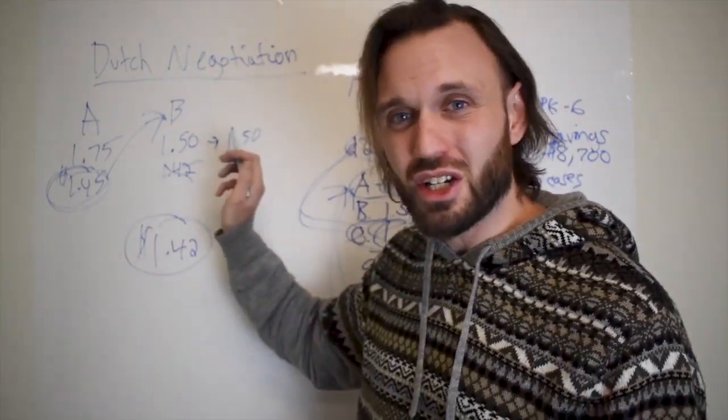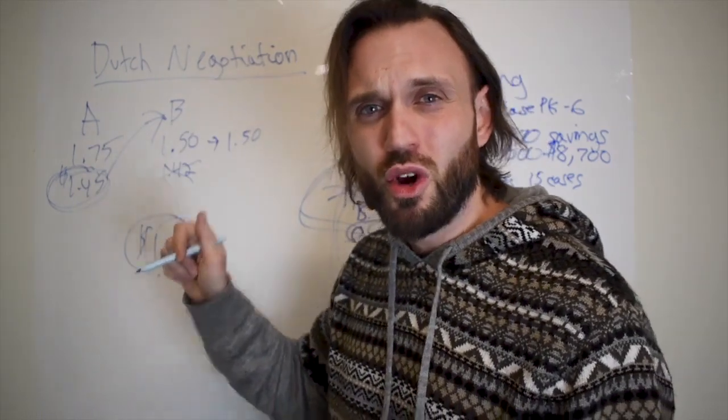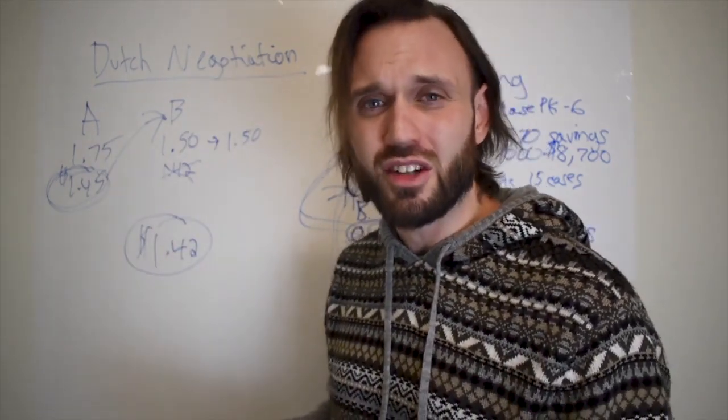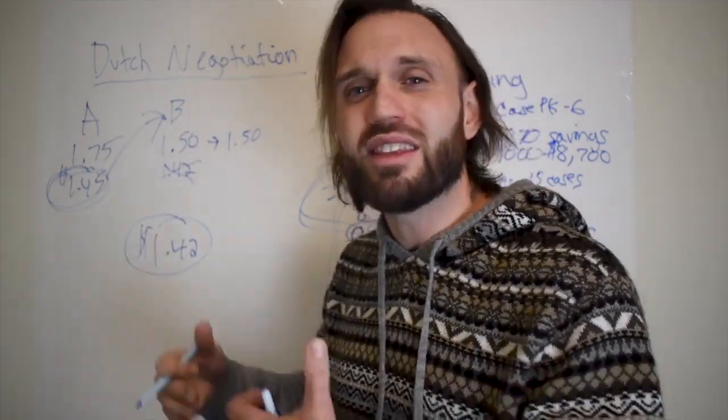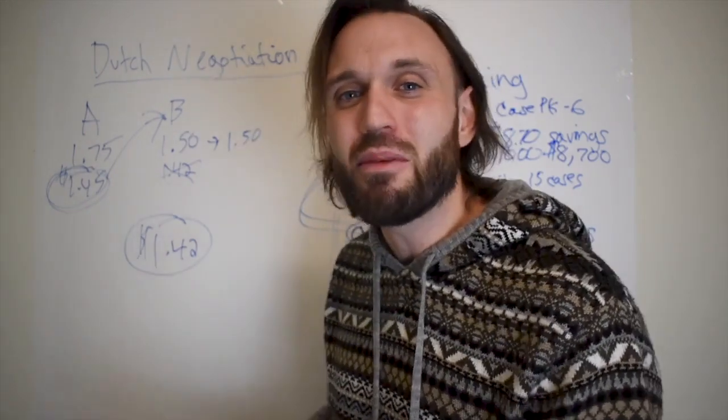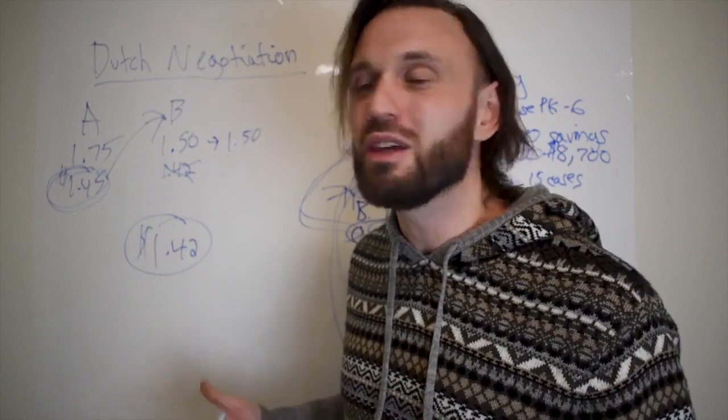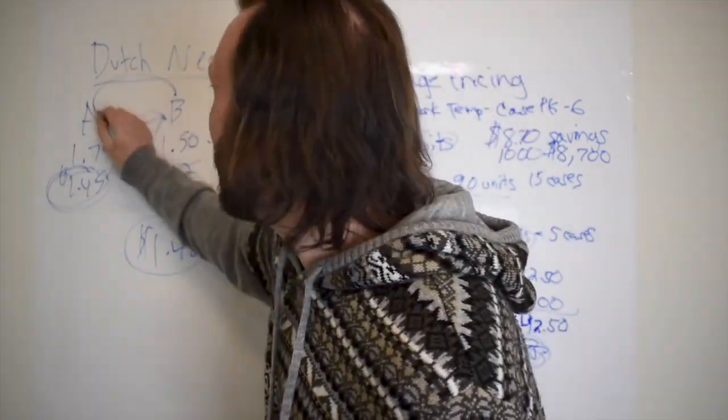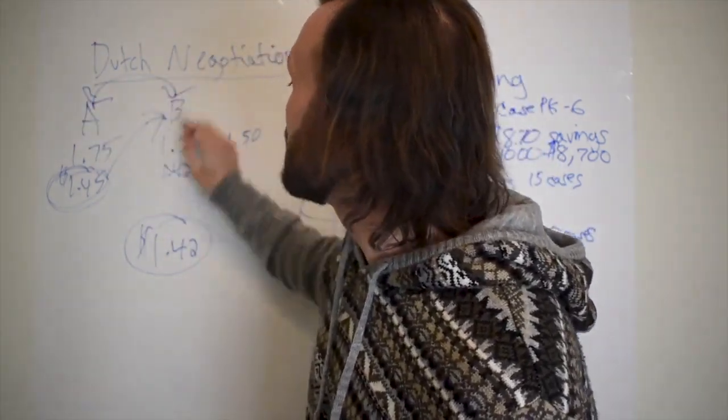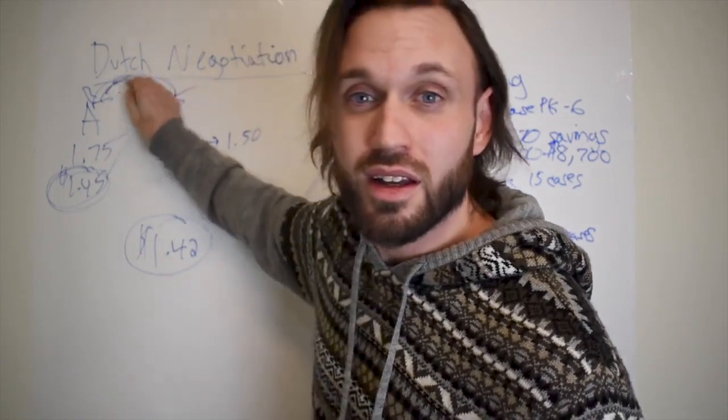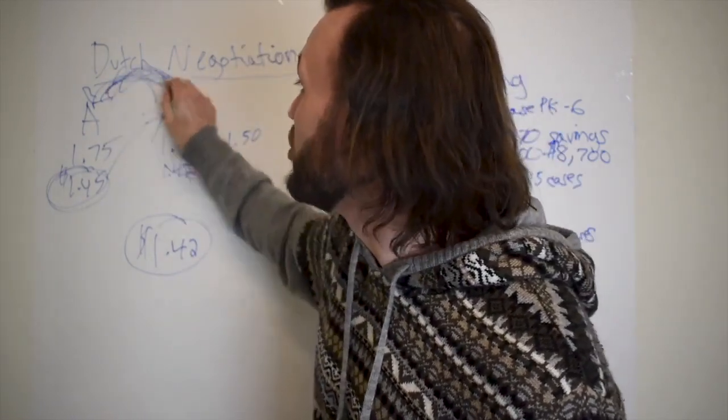So the Dutch negotiation is huge when leveraging two distributors against each other because they're all in the same business. And the name of that business is sell products and as many products as humanly possible. So if distributor A can take the sale from distributor B or vice versa, they're going to do whatever they can to take that.